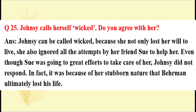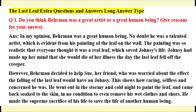Question 25: Johnsy called herself wicked. Do you agree? Answer: Johnsy can be called wicked because she not only lost her will to live, she also ignored all attempts by her friend Sue to help her. Even though Sue made great efforts to take care of her, Johnsy did not respond. In fact, it was because of her stubborn nature that Behrman ultimately lost his life.